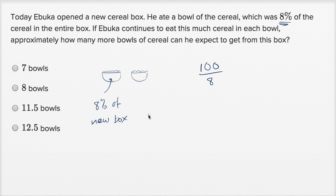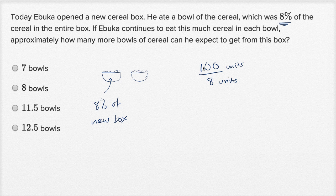One way to think about it, you could just pick a number. Maybe the original box is some 100 units, and then on each day he's going to eat 8% of that, which is going to be 8 units. I don't know what the units might be. It might be milligrams, or actually it'll probably be grams, or even ounces, or whatever else it might be. But then you just get 100 divided by 8. How many servings of 8 can he get if he starts off with 100?